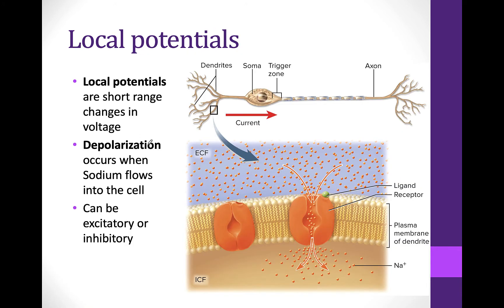A starting potential, or local potential, is a short-range change in voltage. At the dendrites, voltage may change because the cell is receiving a signal from another neuron. When sodium goes into the cell, this is called depolarization.